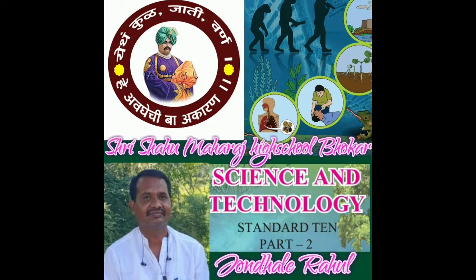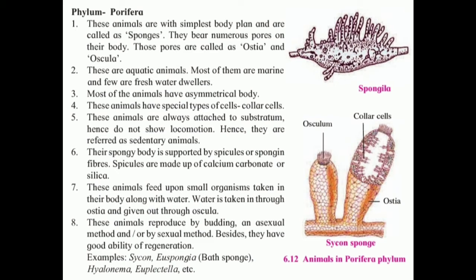Today we study chapter number six: animal classification. In this chapter we study the characteristics of various phyla. These animals are with the simplest body plan and are called sponges. They bear numerous pores on their body. Those pores are called ostia and oscula. These are aquatic animals — most of them are marine and few are freshwater dwellers.